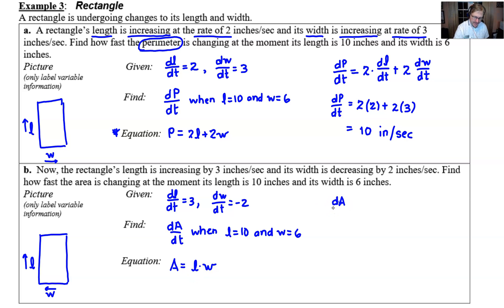So the derivative of A with respect to T is dA/dt. Let's perform the product rule on the right side. Derivative of L is dL/dt multiplied by W. Add to that L times the rate of change of W with respect to T. There's our nice product rule.